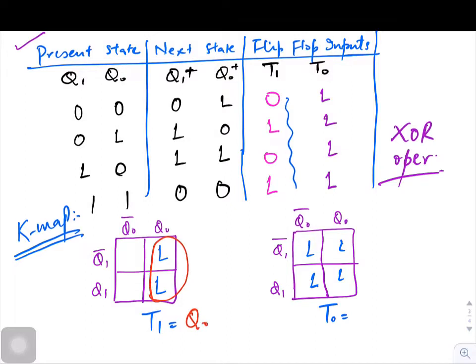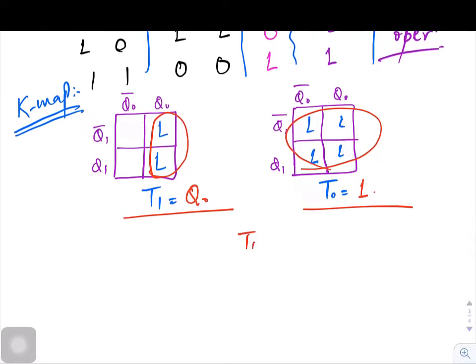Now how will you basically... T1 is equal to Q naught only, and since all are one you can make a group of four and directly the answer is one. So let us note it down: T1 is equal to Q naught and T0 is equal to one.